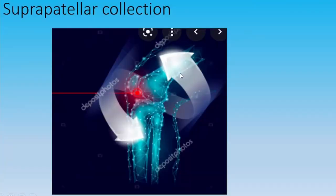Here is another model showing the compartments and regions you need to assess. You need to assess if there is an effusion superior to the patella, which is called the suprapatellar space or bursa. You also have to assess the region of space before the patella, called the prepatellar bursa. You must not ignore the post-patellar compartment, where there can also be effusion, and the infrapatellar space, where there could be infrapatellar bursa collection.